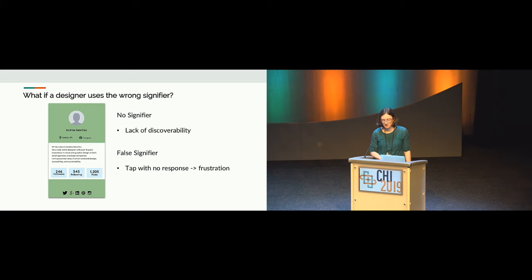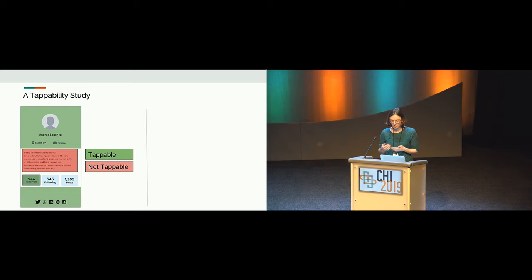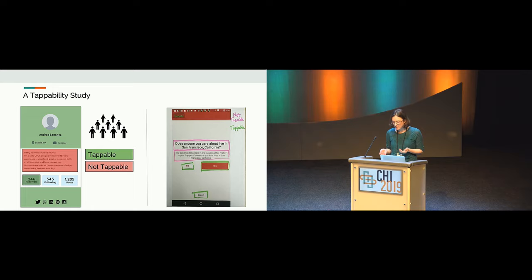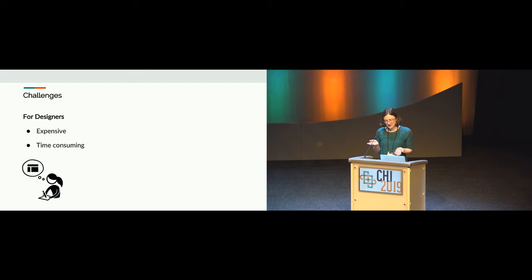One thing a designer can do to understand if people will know which elements are tappable is to conduct a tappability study, where they have people label interface elements they think are tappable and not tappable. They can do this using crowdsourcing, or sometimes by printing out their interfaces on paper. The challenges are that designers have to run this study on every new visual design change, which can be expensive and time consuming.